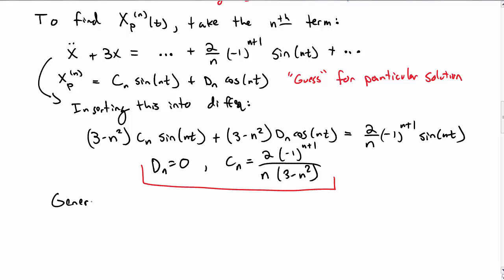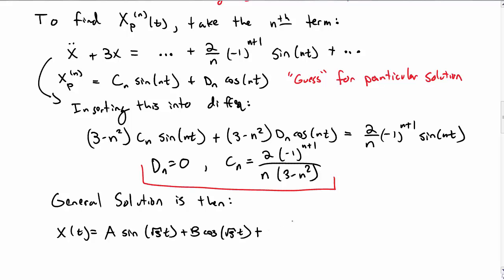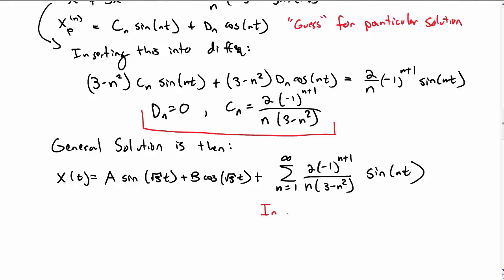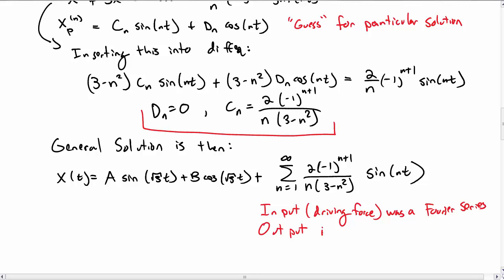We found the nth particular solution, so now we know the general solution: the homogeneous solution plus the infinite number of particular solutions, with the coefficient c sub n times sine of nt for arbitrary n. It's interesting — the input to our system was a Fourier series, that driving force was a Fourier series, and so what we get out at the end of the day is yet another Fourier series. That sort of makes sense.